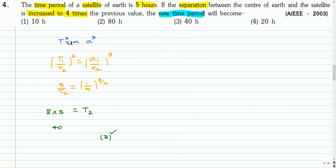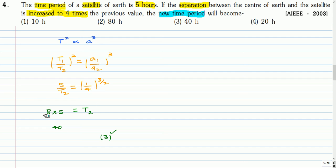According to Kepler's third law, the square of the period is directly proportional to the cube of the radius. From this we get (T1/T2)² = (a1/a2)³. In the second case the distance is increased four times, giving (T1/T2)² = (1/4)³, so T1/T2 = 1/8. Therefore T2 = 8 × T1 = 8 × 5 = 40 hours. The correct option is option three.